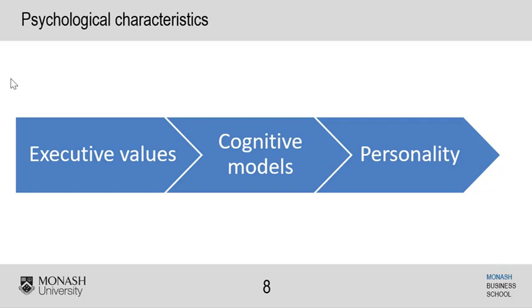There are three key aspects to psychological characteristics. The first is executive values, the second is cognitive models, and the third is personality. All of these combined will influence the way the top executive or CEO makes their decisions and ultimately drive organizational performance.